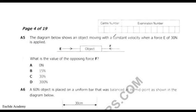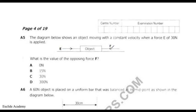Question five: a diagram shows an object moving with constant velocity when a force E of 30 newtons is applied. F represents an opposing force — friction acting against the object. The object is moving at constant velocity. What is the value of the opposing force F?